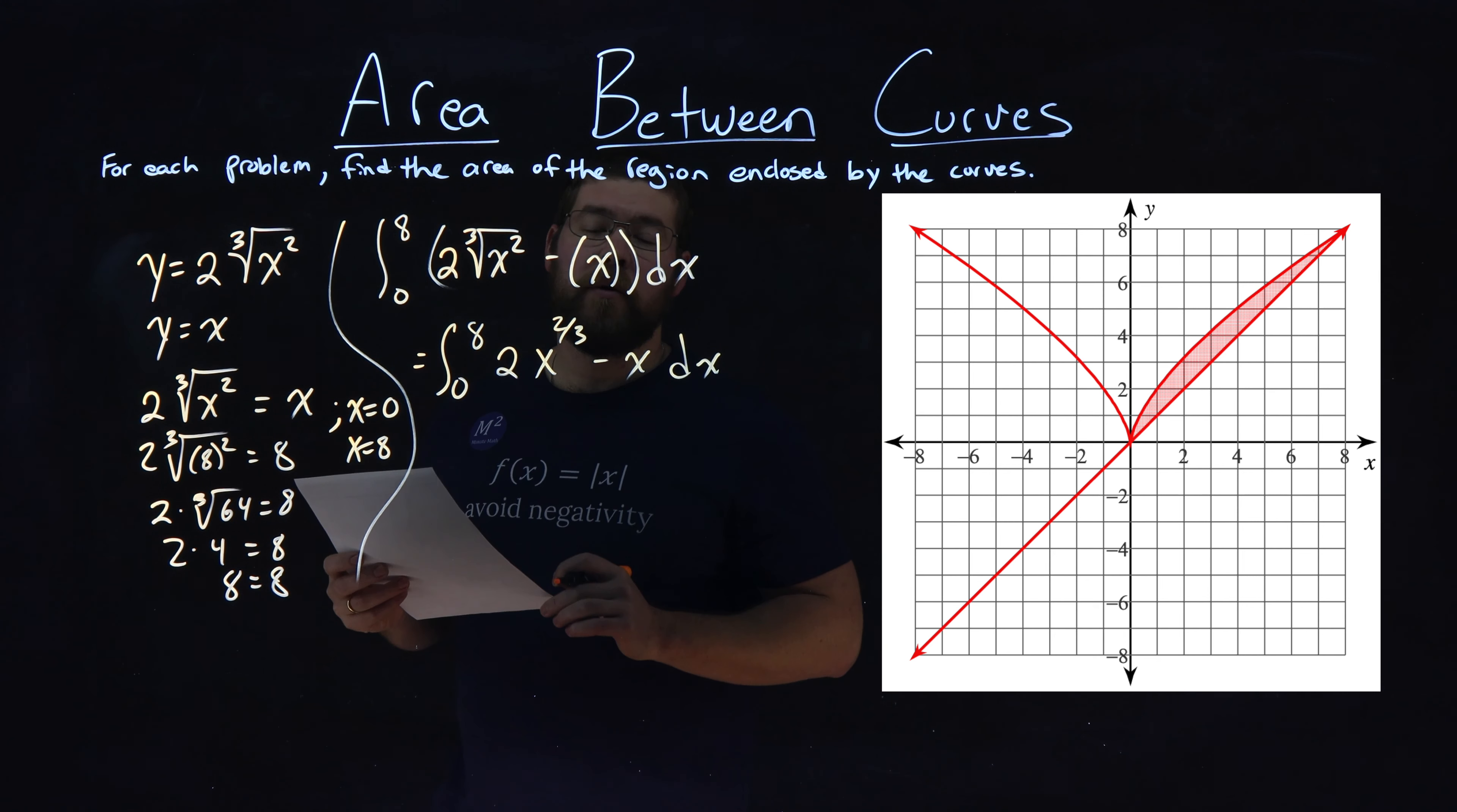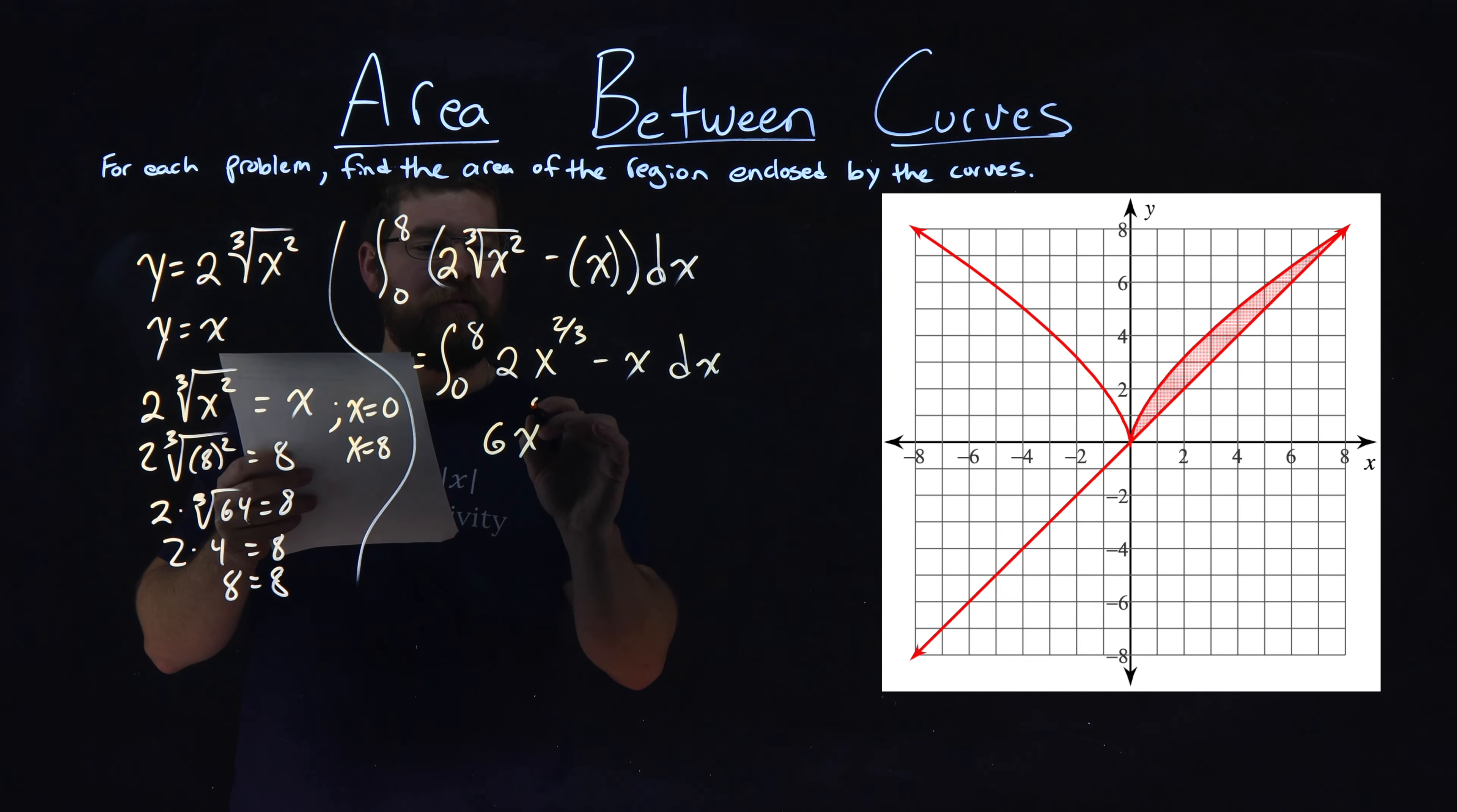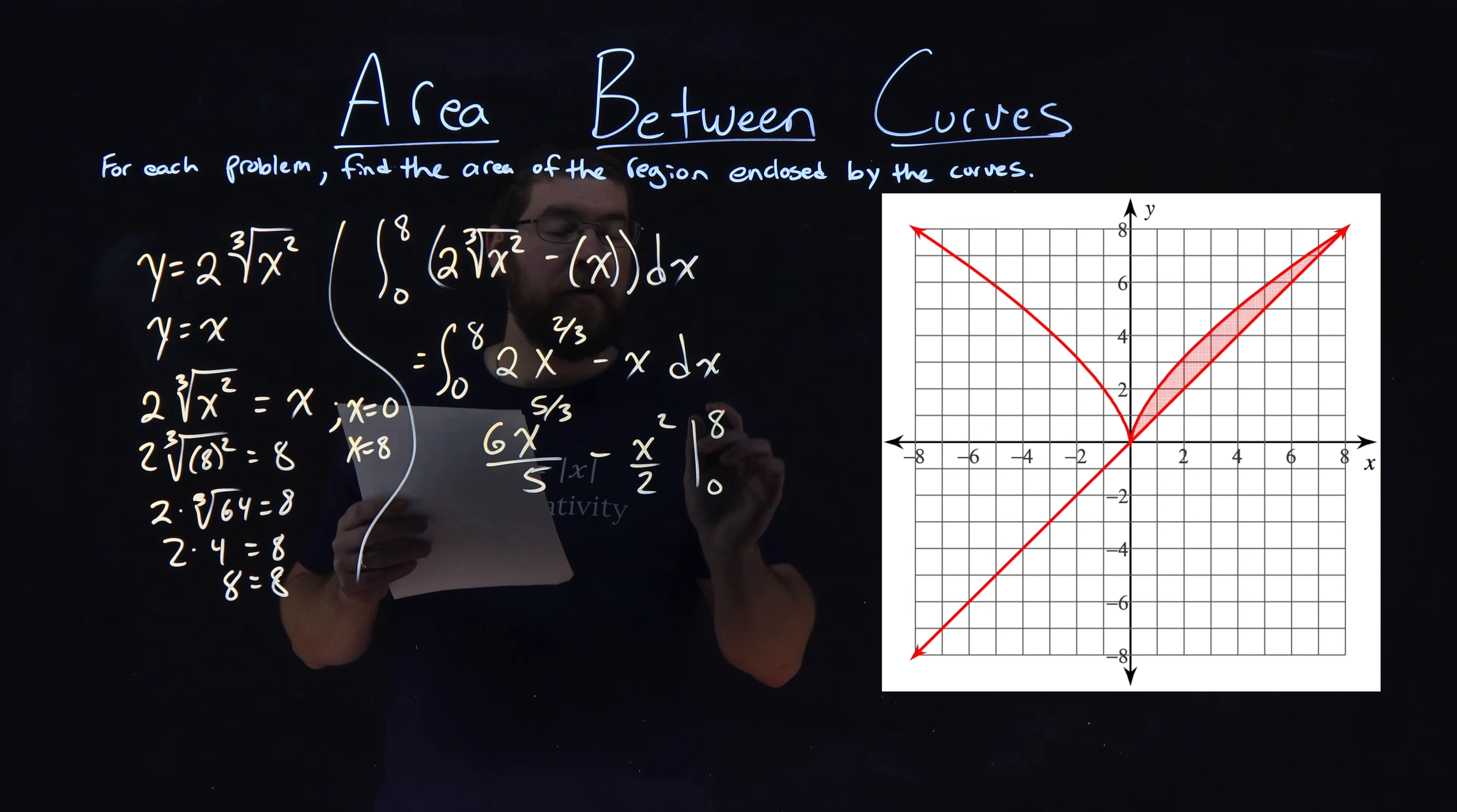And so, now we want to find the integral of 2x to the two-thirds power, which is 6x to the five-thirds power over 5. And the integral of x is x squared over 2. And we're integrating this from 0 to 8.